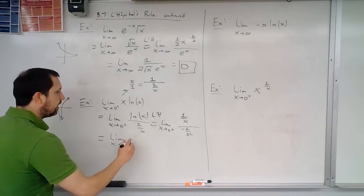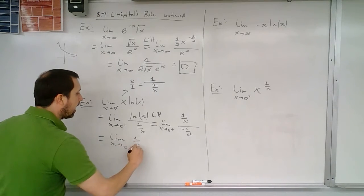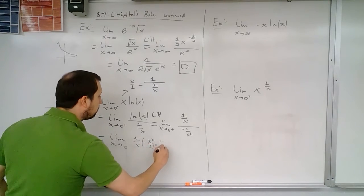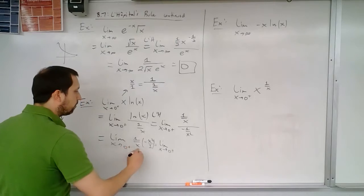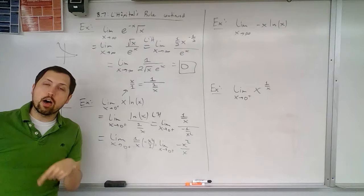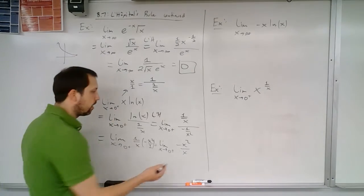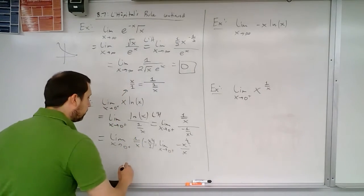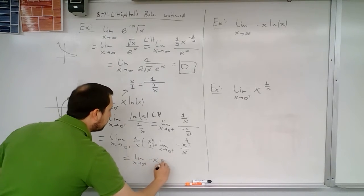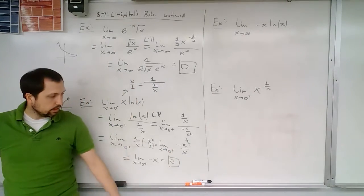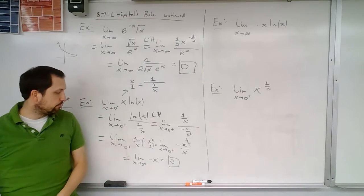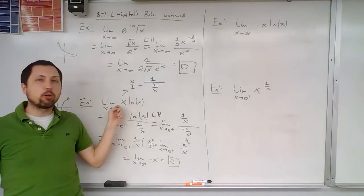We have the limit as x tends to zero from the right of one over x times negative x squared over one, which simplifies to the limit as x tends to zero from the right of negative x squared over x. Cancel one power of x to get the limit as x approaches zero from the right of negative x, which is simply zero. So that is our strategy for dealing with multiplication: turn it into a fraction.